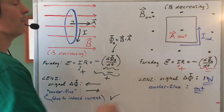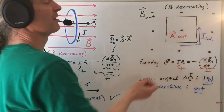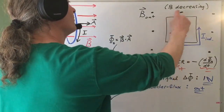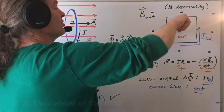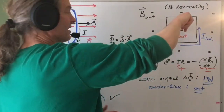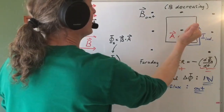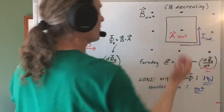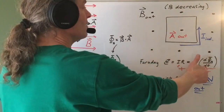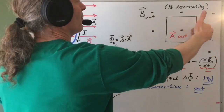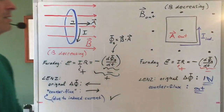The counter flux produced by the induced current must be out. So we need to figure out what direction of current produces an outward flux — meaning the current must produce a magnetic field through the center of the loop that's out. If the current were going one way, using the right-hand rule for current — fingers in the direction of the current, thumb pointing in the direction of the magnetic field produced — that would give a counter flux inward, which doesn't help. So the current has to be going the other way. Fingers in the direction of the current, thumb points in the direction of the magnetic field at the center of the loop — that's out. That means an outward flux, which is what we need for the counter flux.